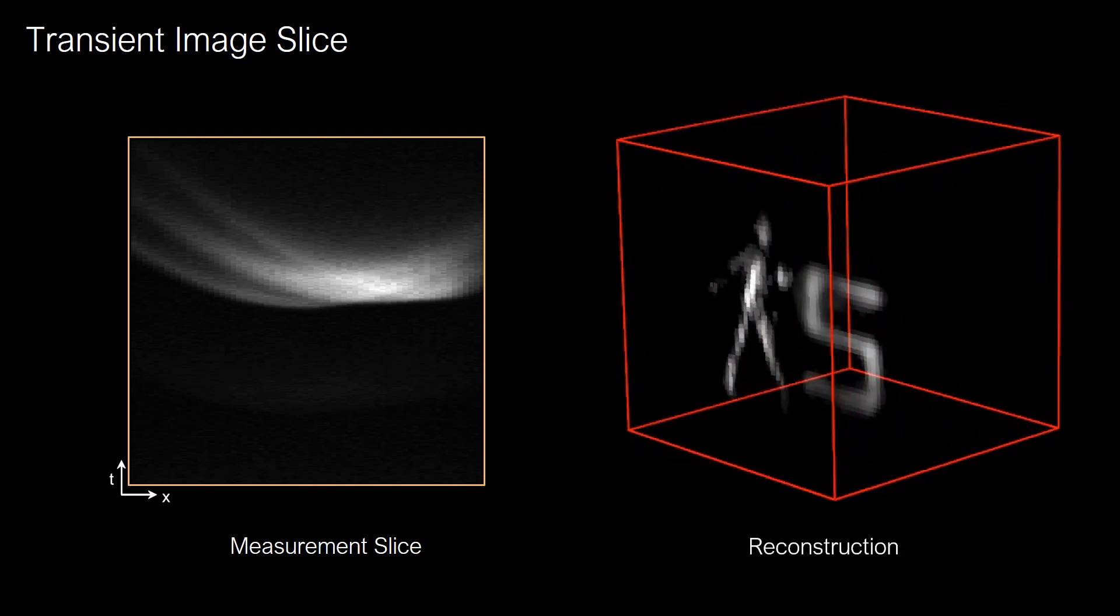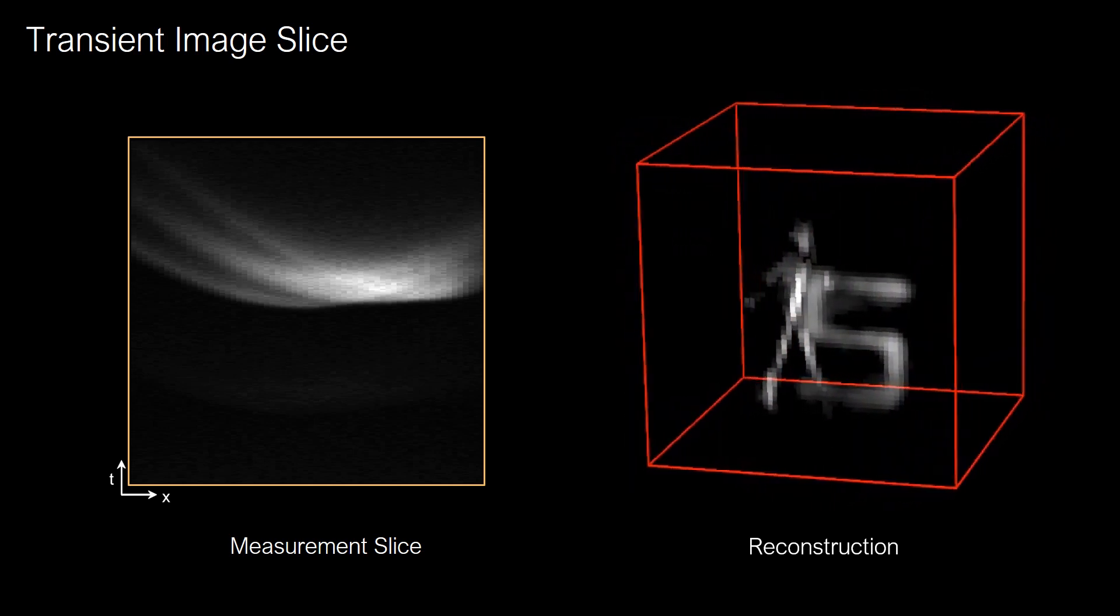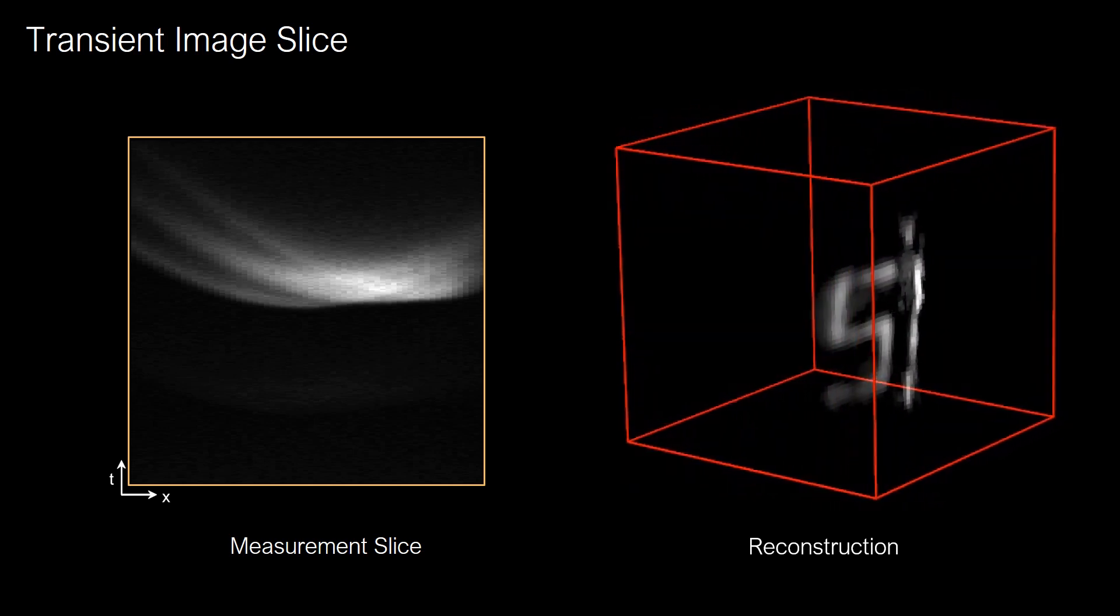We propose a method that can recover hidden object geometry from such measurements. The reconstruction on the right shows the corresponding recovered albedo.